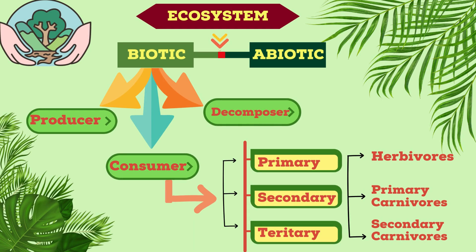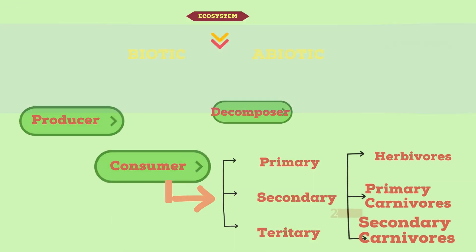Biotic components are further divided into producer, consumer and decomposer. Consumer is further subdivided into primary consumer, secondary consumer and tertiary consumer. Primary consumers are called herbivores, secondary consumers are called primary carnivores, and tertiary consumers are called secondary carnivores.